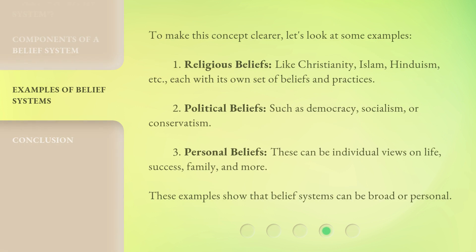To make this concept clearer, let's look at some examples. First, religious beliefs — like Christianity, Islam, Hinduism, etc., each with its own set of beliefs and practices. Second, political beliefs — such as democracy, socialism, or conservatism. Third, personal beliefs — these can be individual views on life, success, family, and more. These examples show that belief systems can be broad or personal.